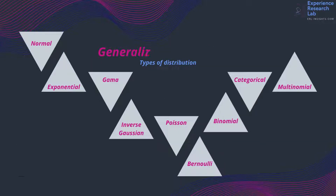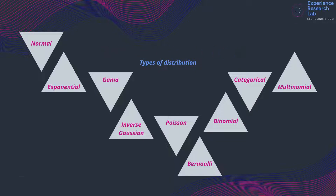There are several types of distribution in the generalized linear model. Among others are normal distribution, exponential distribution, gamma distribution, inverse Gaussian distribution, and Poisson distribution.